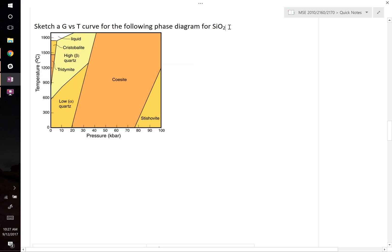Okay, this problem asks us to sketch a G versus T curve for the following phase diagram, which is pure SiO2. As we change pressure or temperature, we see that there's a lot of different phases that SiO2 can actually form in. So let's go ahead and sketch this.